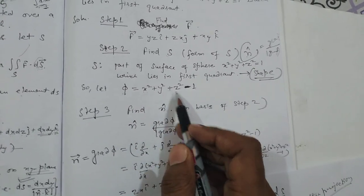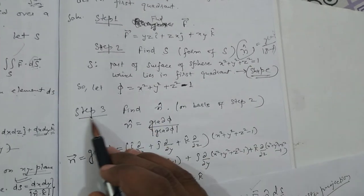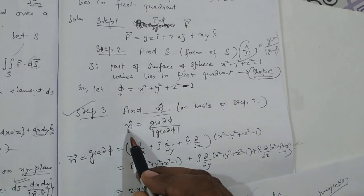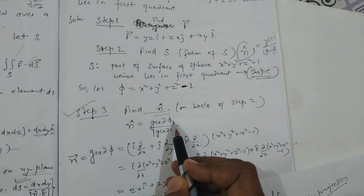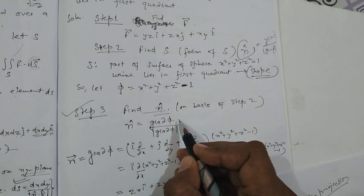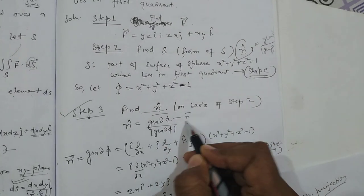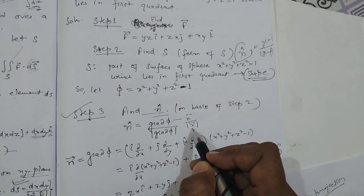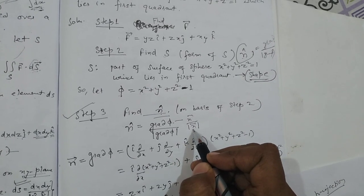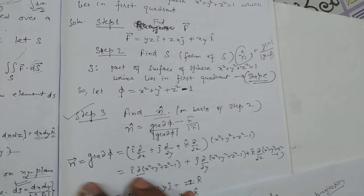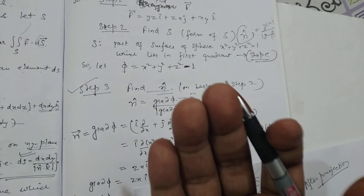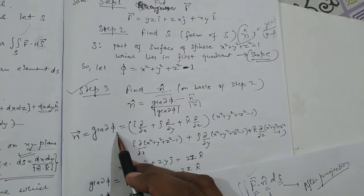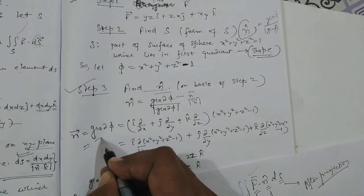So n̂ is equal to ∇φ / |∇φ|. The normal vector n⃗ is the gradient of φ, i.e., n⃗ = ∇φ. After computing n⃗, we divide by its magnitude to get n̂. Let's compute ∇φ.